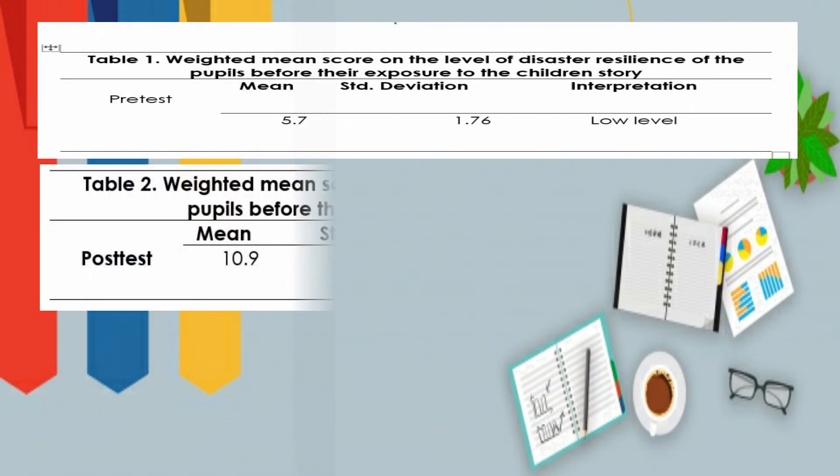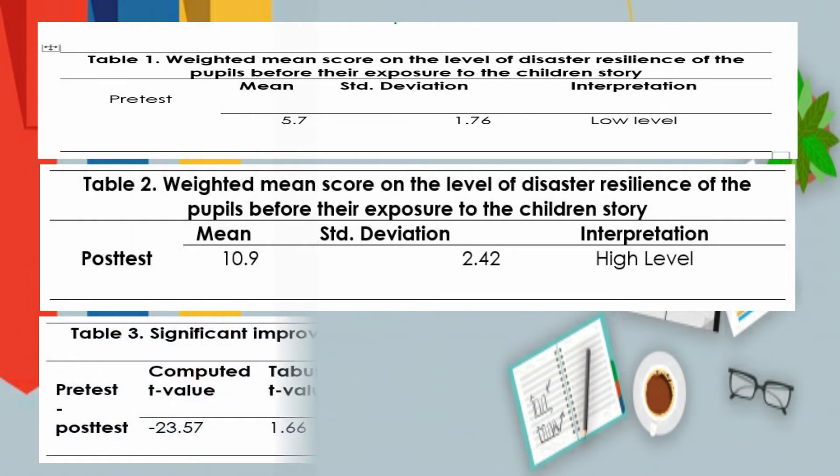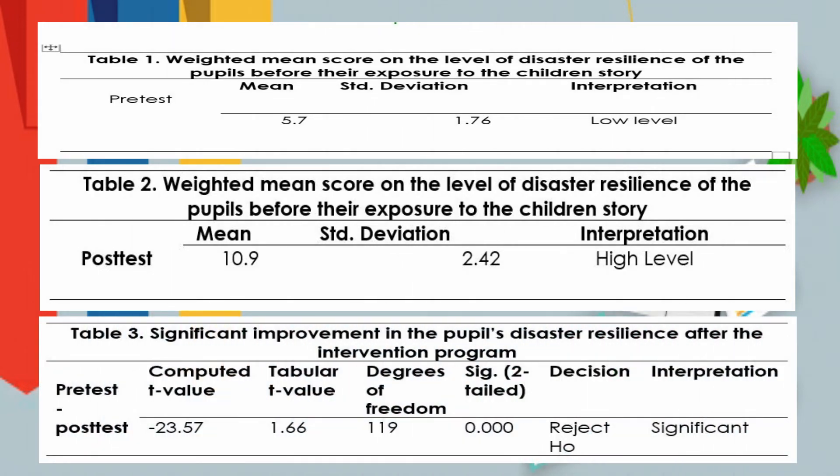Table 2 shows an improvement in the level of participants' disaster resilience after the intervention program. Table 3 result further reveals that the researcher-made children's stories is effective in building disaster resilience of the Key Stage 2 learners.